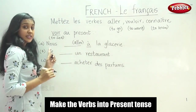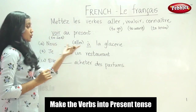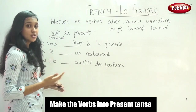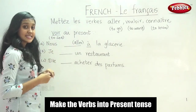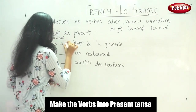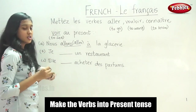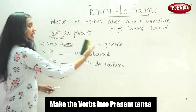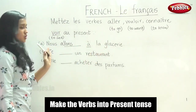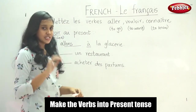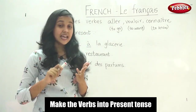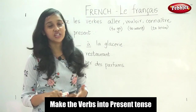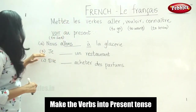Now, what is the subject pronoun here? It is 'Nous.' Do you remember the Aller conjugation? For 'Nous,' it is 'Nous allons.' So your answer is: Nous allons à la glossaire — we go. Very simple. We just followed three steps: read the sentence, identified the verb, and determined the conjugation.